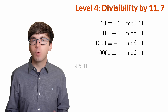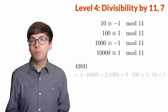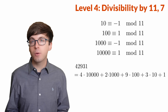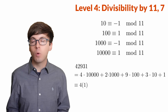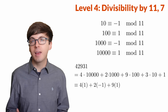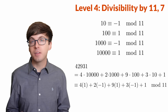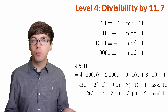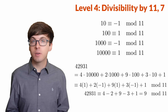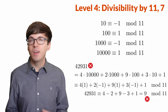Say we want to check if 42,931 is divisible by 11. We write out the base 10 expansion. When we divide by 11: 10,000 has remainder 1, 1,000 is congruent to negative 1, 100 is congruent to 1, and 10 is congruent to negative 1. So we alternate adding and subtracting the digits: plus 4, minus 2, plus 9, minus 3, plus 1, which equals 9. This is not divisible by 11, so neither is the original number.